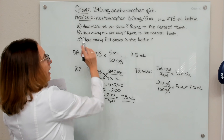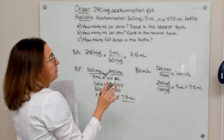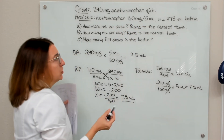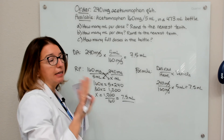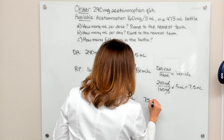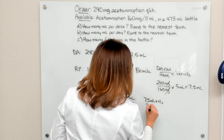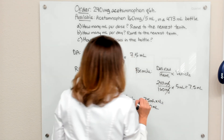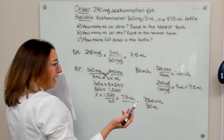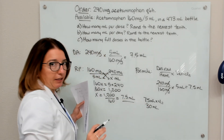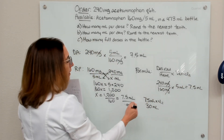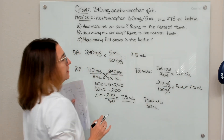Part B asks how many milliliters the patient receives per day. Per the order, the patient gets this medication every 6 hours, which is 4 times in a 24-hour period. So we take 7.5 ml times 4, which equals 30 ml per day. We were told to round to the nearest tenth, but 30 is already a whole number, so it's already rounded appropriately.